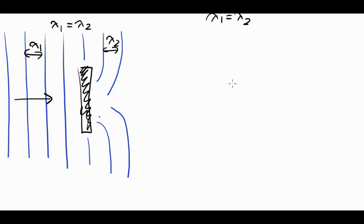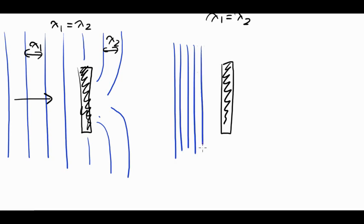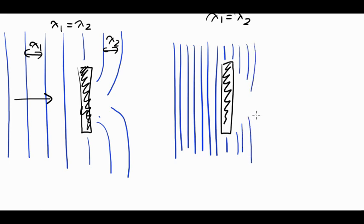So in this case, if we took the same barrier, but this time we have a smaller wavelength approaching the same size barrier, a smaller wavelength will show some diffraction, but it's going to show less diffraction than before. Lambda 1 is equal to lambda 2.